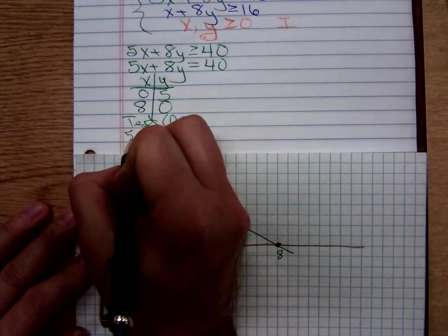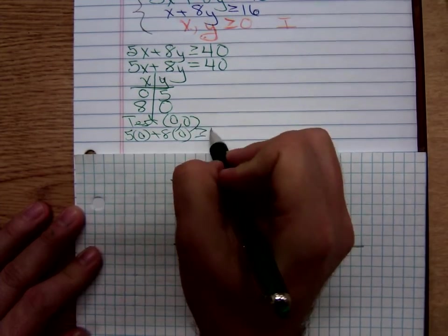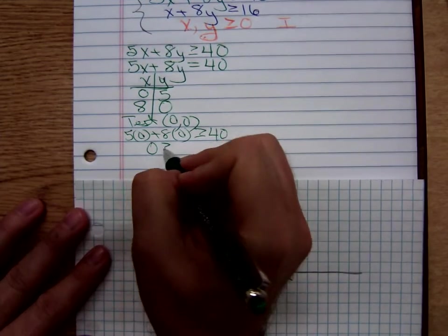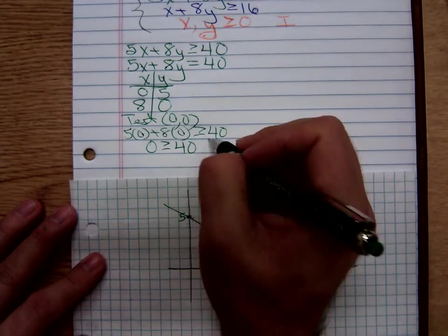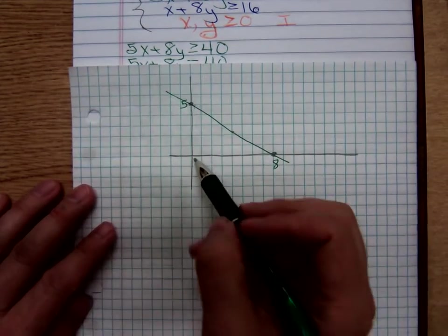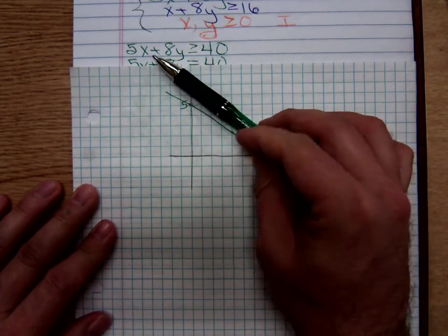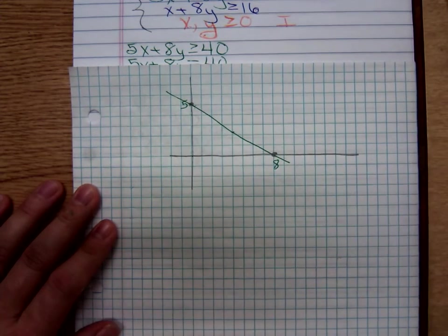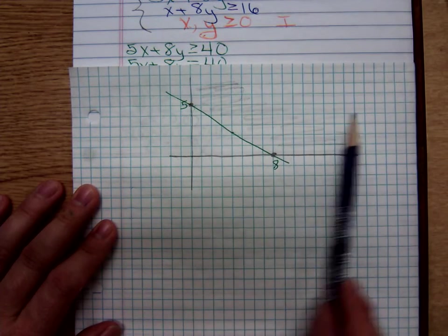So, 5 times 0 plus 8 times 0, is that greater than or equal to 40? 0 is bigger than 40. True or false? False. So, we don't want to shade here at the origin. Where are we shading? We're shading away from the origin. We're shading out here.